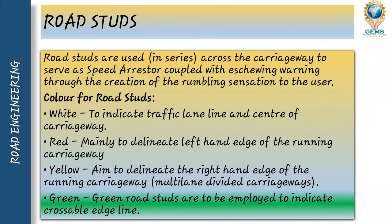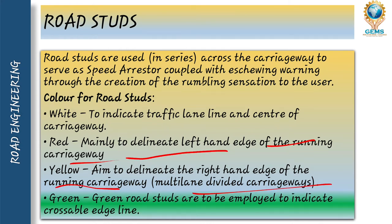Next is road studs. Road studs are used across the carriageway to serve as speed arresters, coupled with skimming through the creation of a rumbling sensation on the user. The colors for road studs are: white to indicate traffic lane lines and the center of the carriageway; red to denote the left-hand edge of the running carriageway; yellow to denote the right-hand edge of the running carriageway in a multiple-lane divided carriageway; and green road studs to indicate the possible edge line.